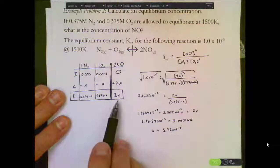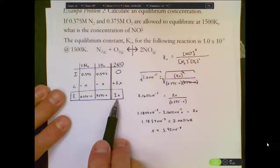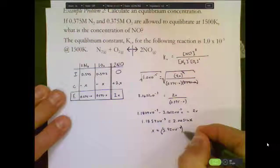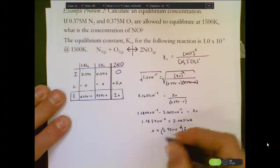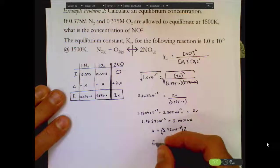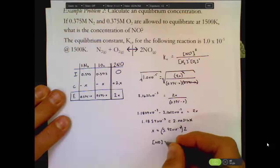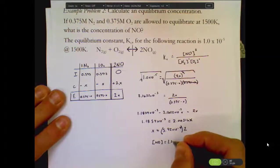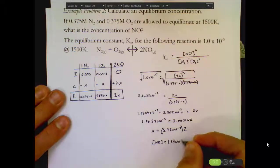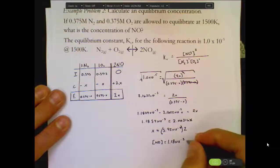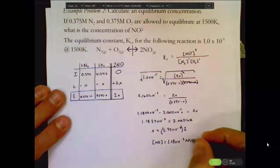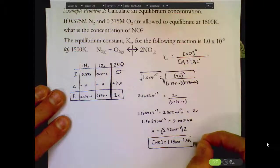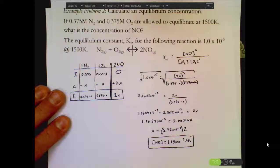So X can then be substituted into my ICE table, which means I need to do X times 2, so this times 2 is going to be my concentration of NO, which will be equal to a rounded value of 1.18 times 10 to the negative 3rd. And since that's the concentration, that's the molarity, which is what the problem wants us to find.